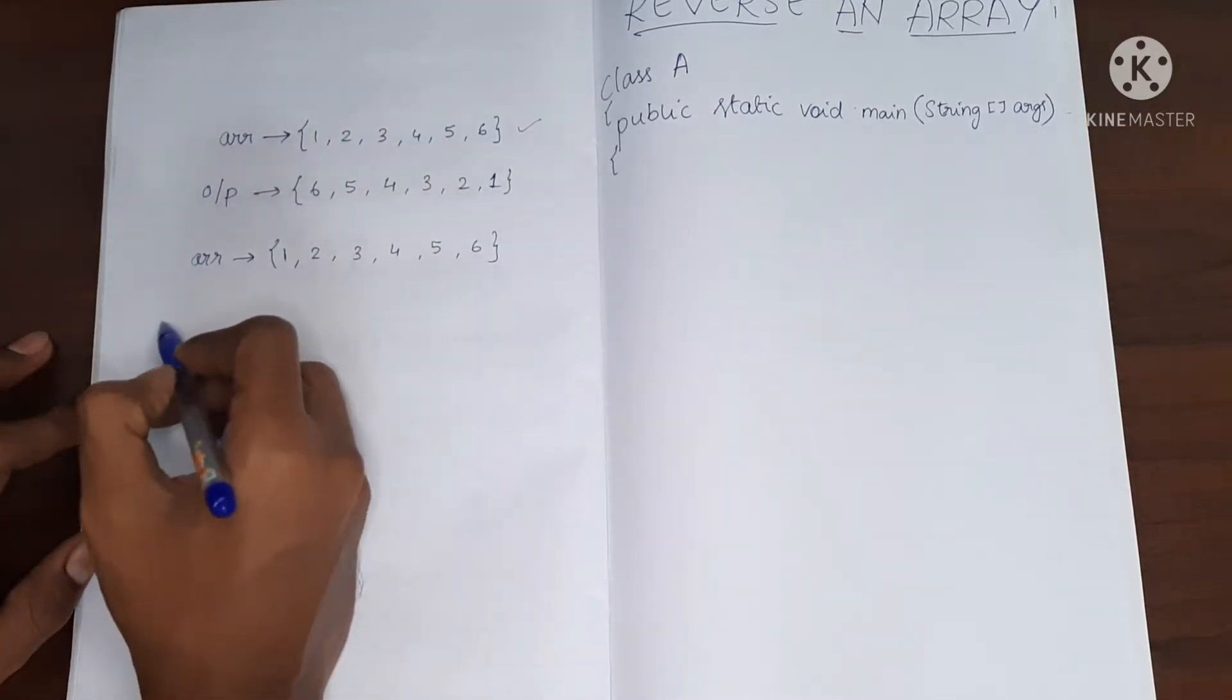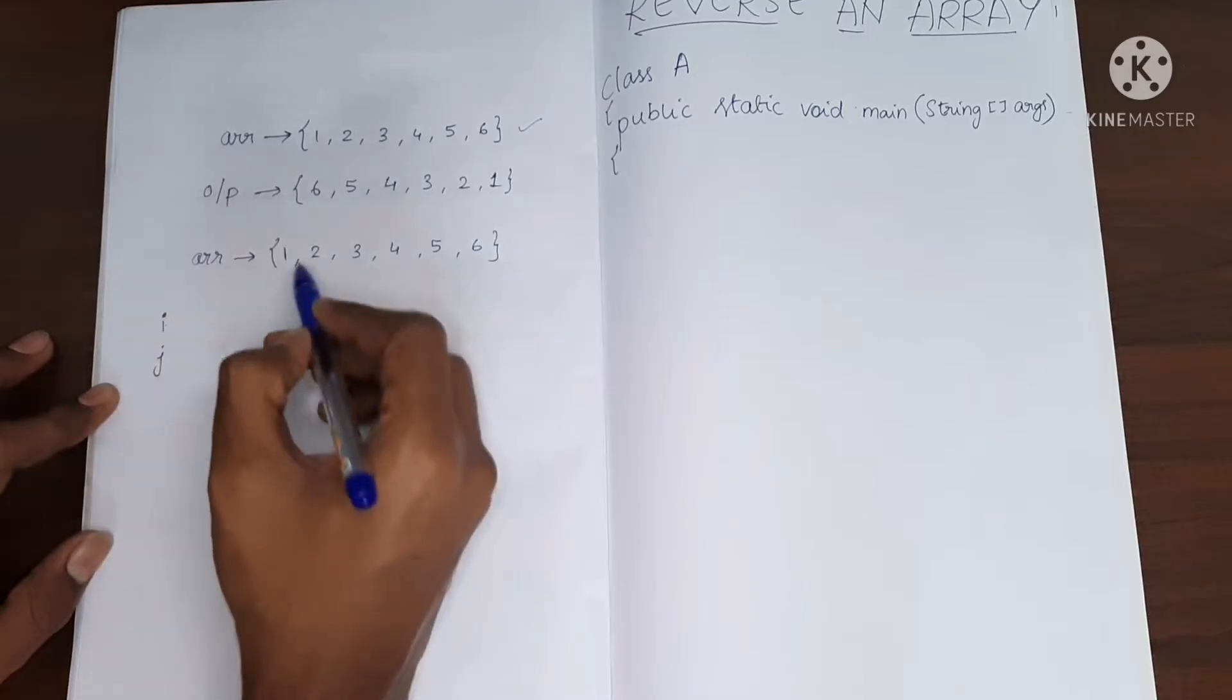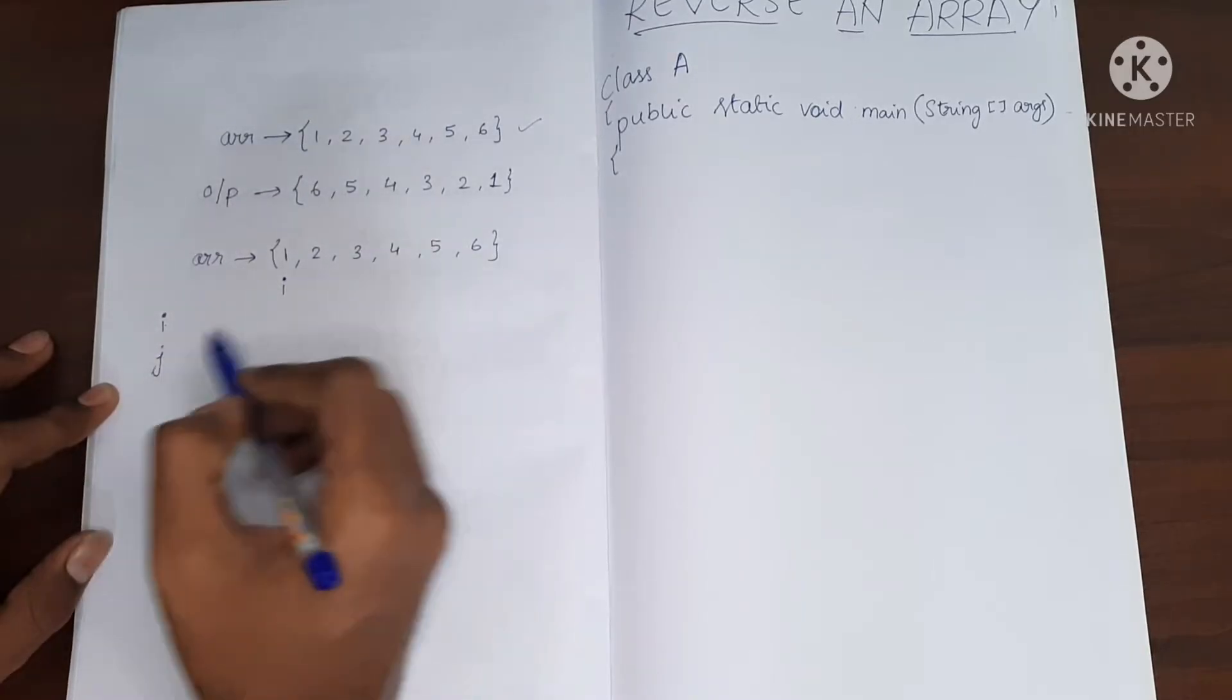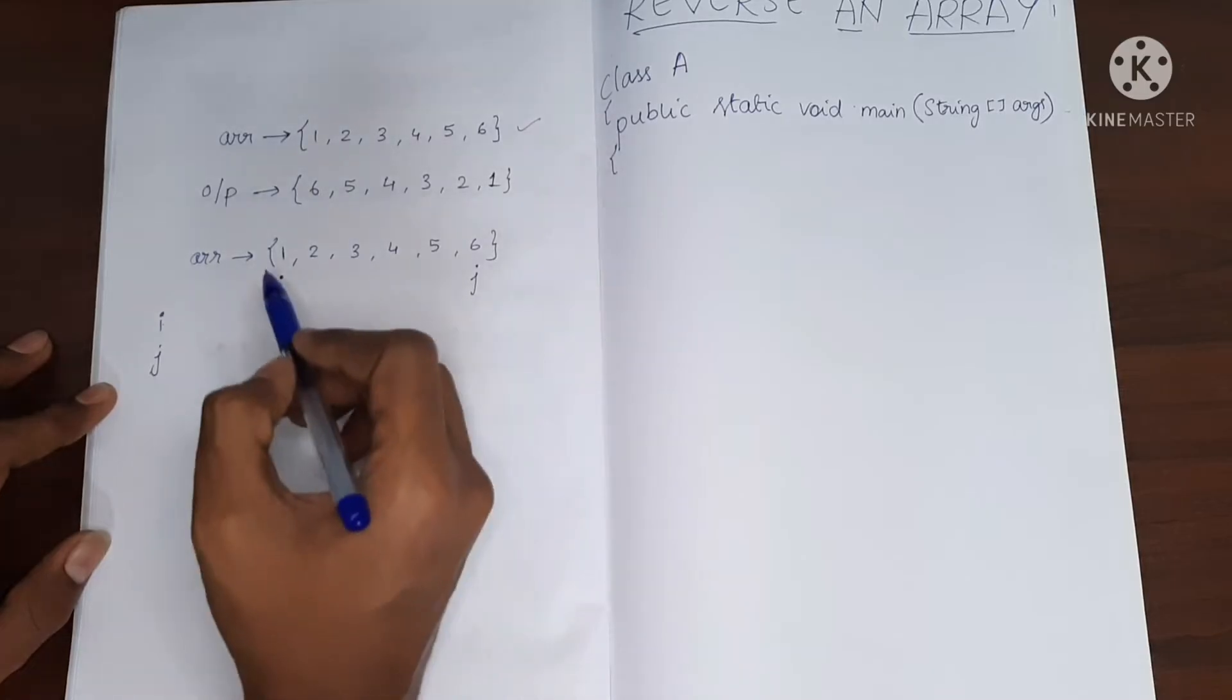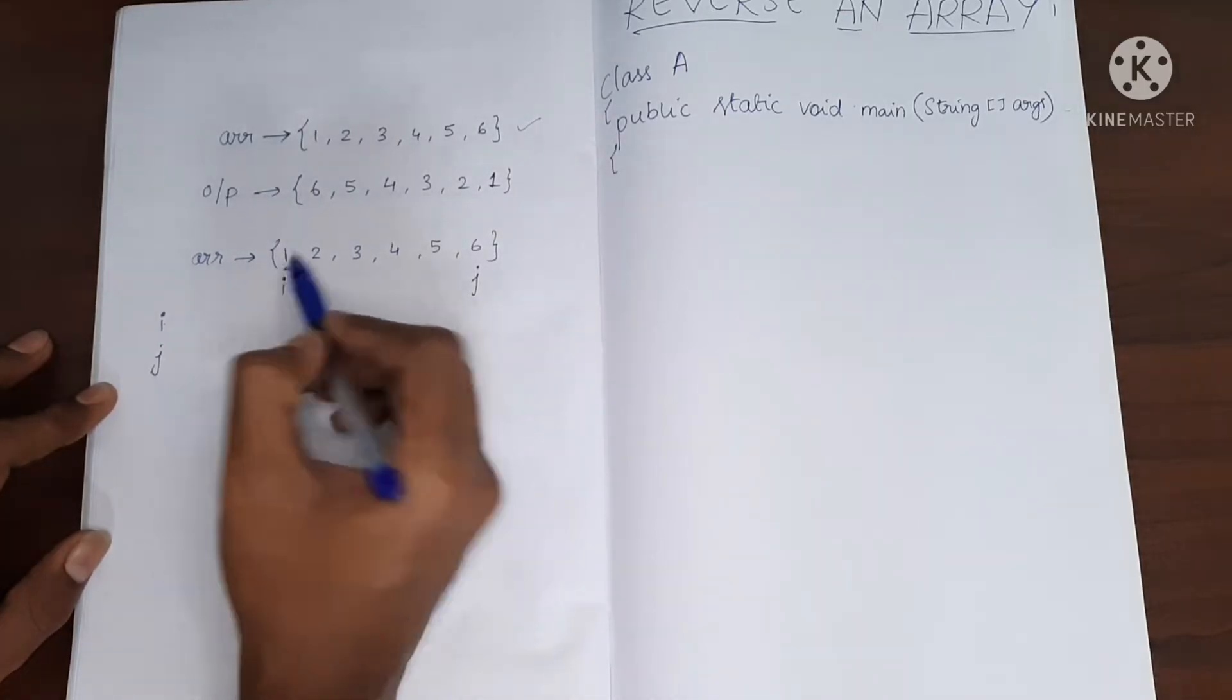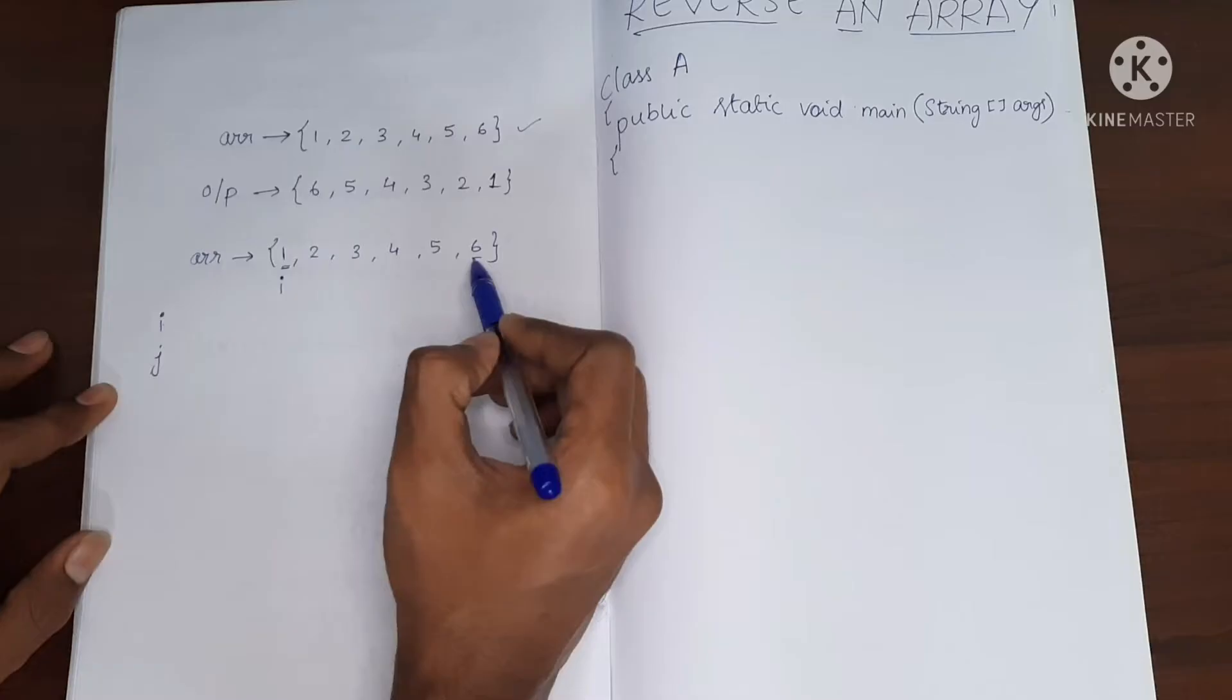I'm going to have two variables i and j. i will be pointing to the first element and j will be pointing to the last element. Now what I'm going to do is I'm going to swap the value present at ith index and the value present at jth index.